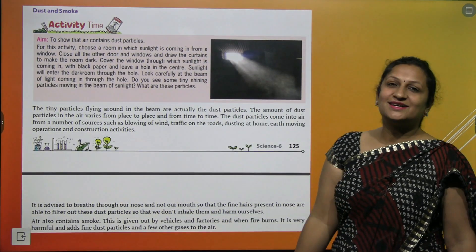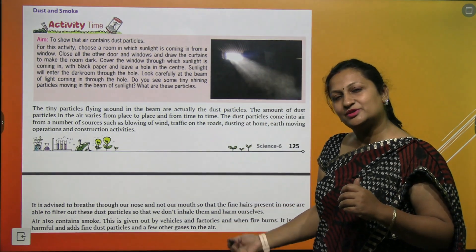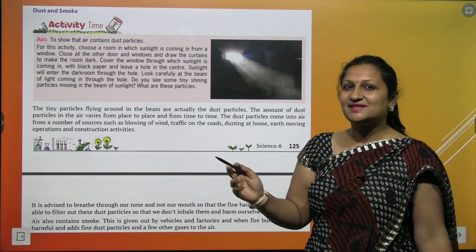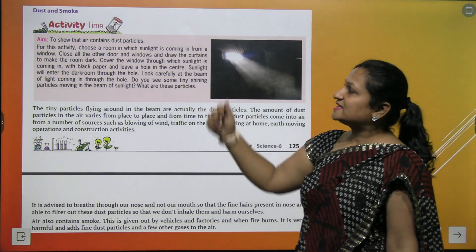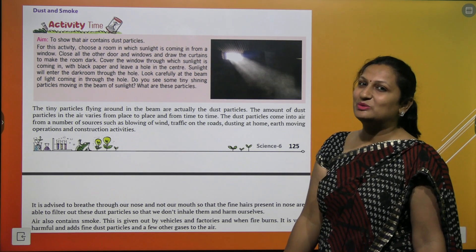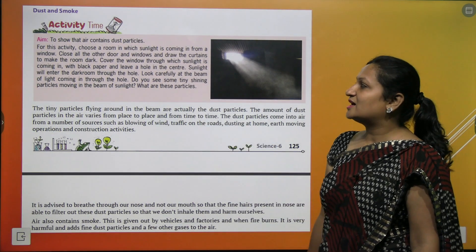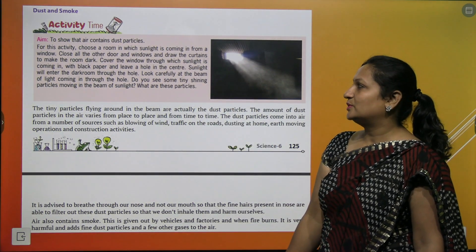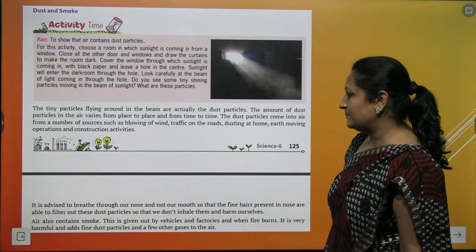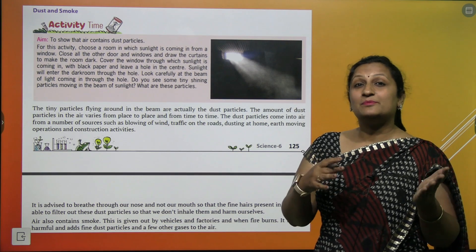Activity — to show that air contains dust particles. Aap morning ke time window se apne curtains hataiye. What will you see? You will see a sunbeam coming into your room in a straight line, and you will see particles of dust rolling into it. For this activity, choose a room where sunlight comes through a window. Close all other doors and windows to make the room dark, cover the window with black paper and leave a hole in the center. Sunbeam will enter through the hole. Look carefully — you will find tiny shiny particles moving in the beam of light. They are dust particles. Dust varies from place to place — jahan pollution level zyada hoga, wahan dust particles zyada honge.